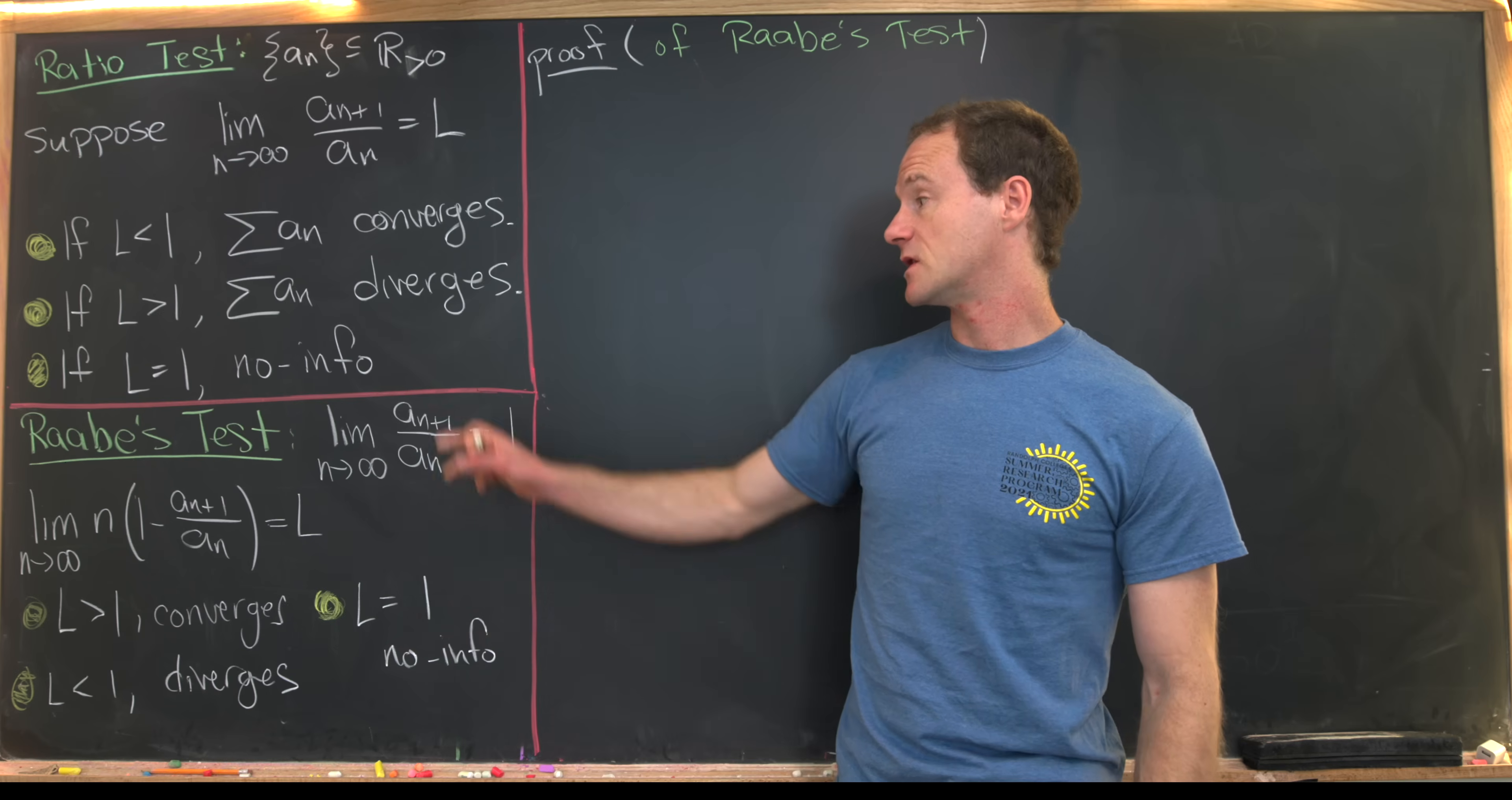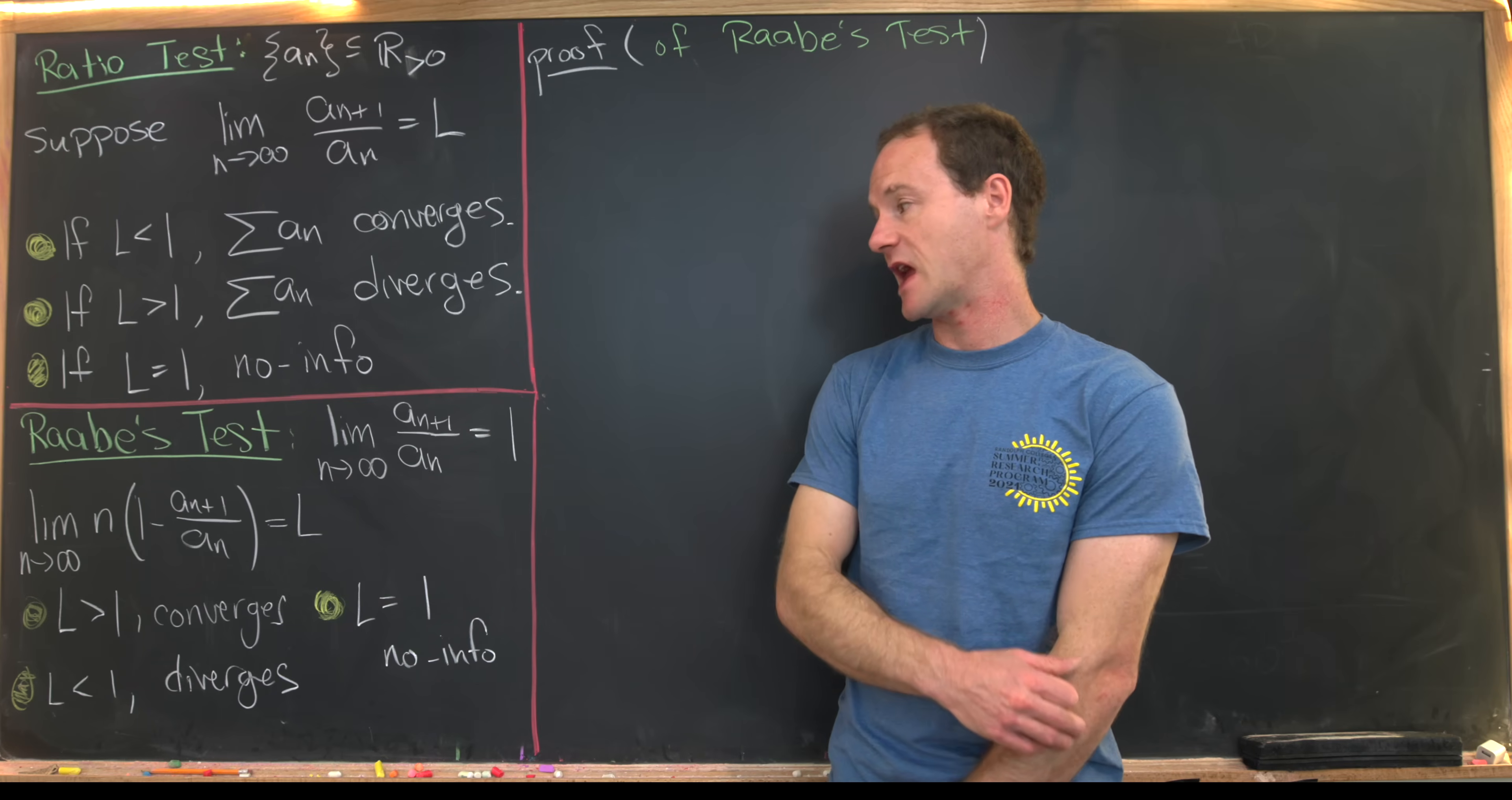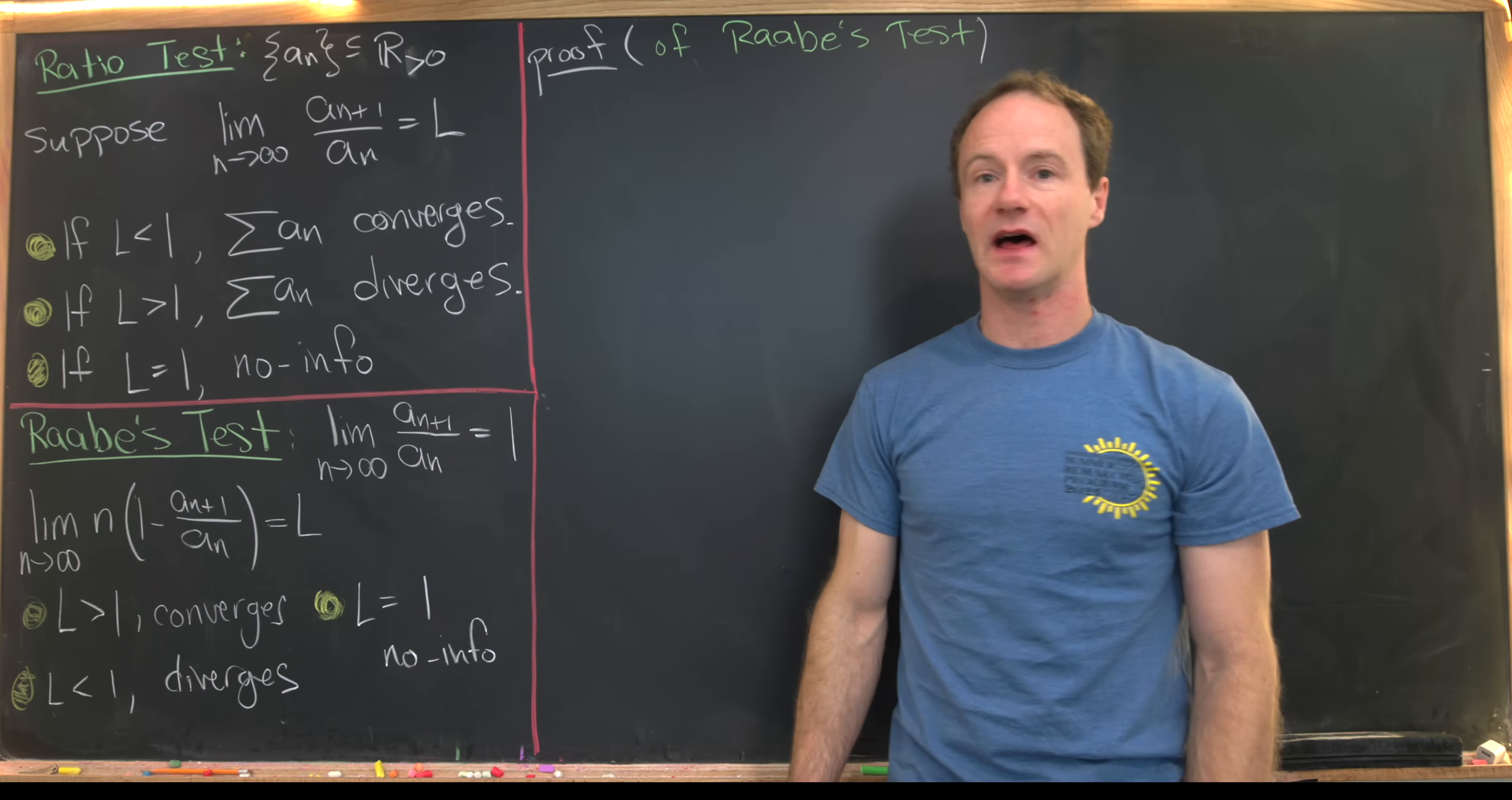But luckily there's this other test called Raabe's test, and that takes over when this limit equals 1. So you have to start by assuming that the limit as n goes to infinity of a_{n+1}/a_n equals 1, and then you calculate the following limit: the limit as n goes to infinity of n times the quantity (1 - a_{n+1}/a_n). We'll set that limit equal to L.